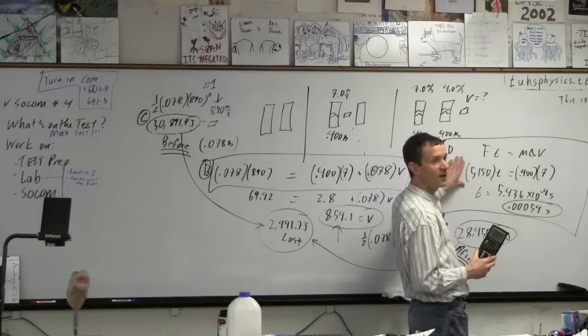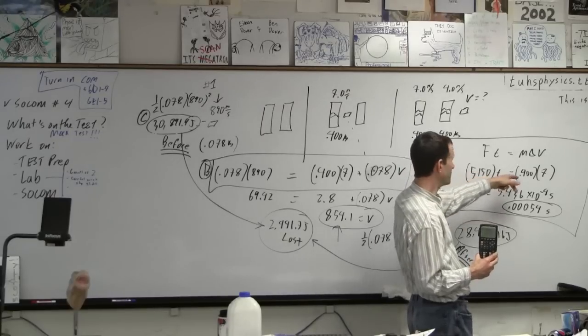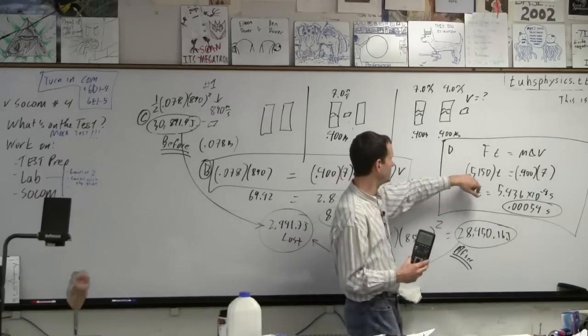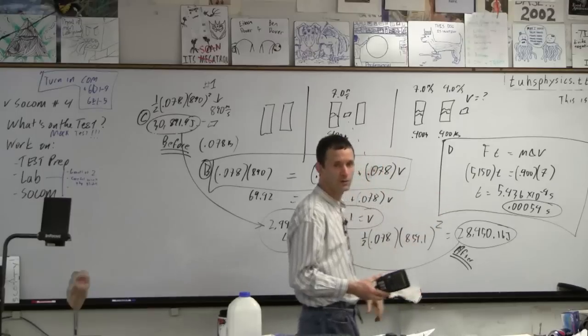What if you wanted to find the force on the bullet? Right? You just do, all you do is the bullet's mass and the bullet's change in velocity. Right? But if we did that, we'd just get negative 5,150. Because it's the equal and opposite force. Yeah?